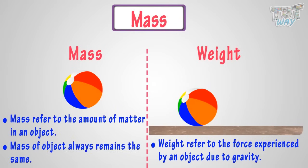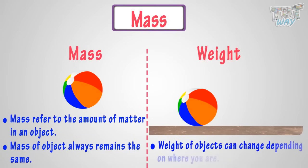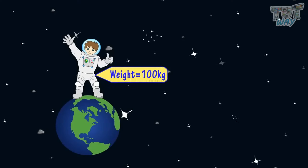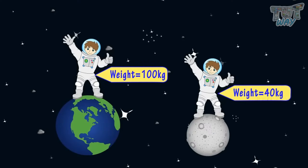Mass of objects always remains the same, but the weight of objects can change depending on where you are. For example, your weight on Earth will be different from your weight on the Moon. We will study more on the difference between mass and weight in science.